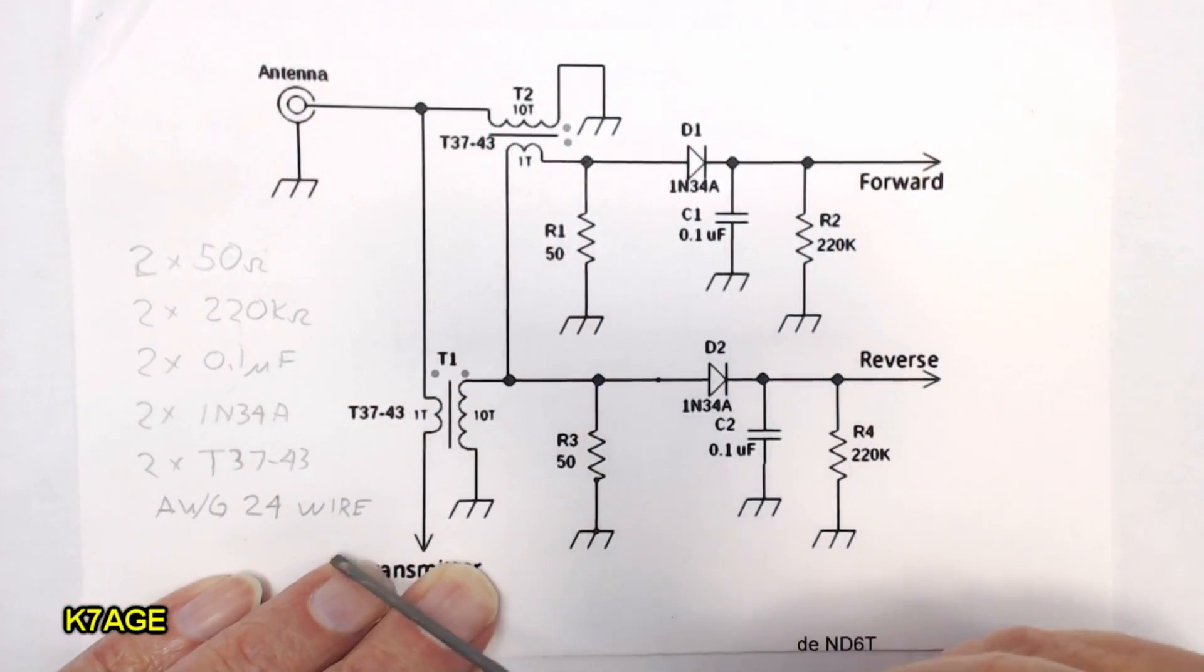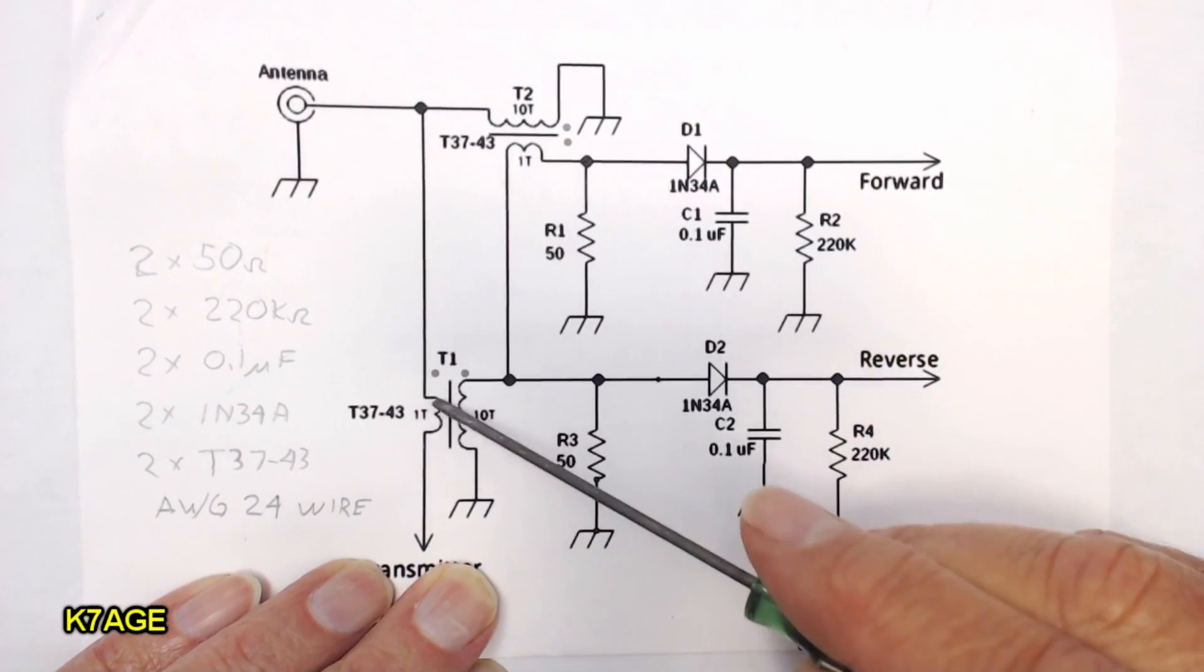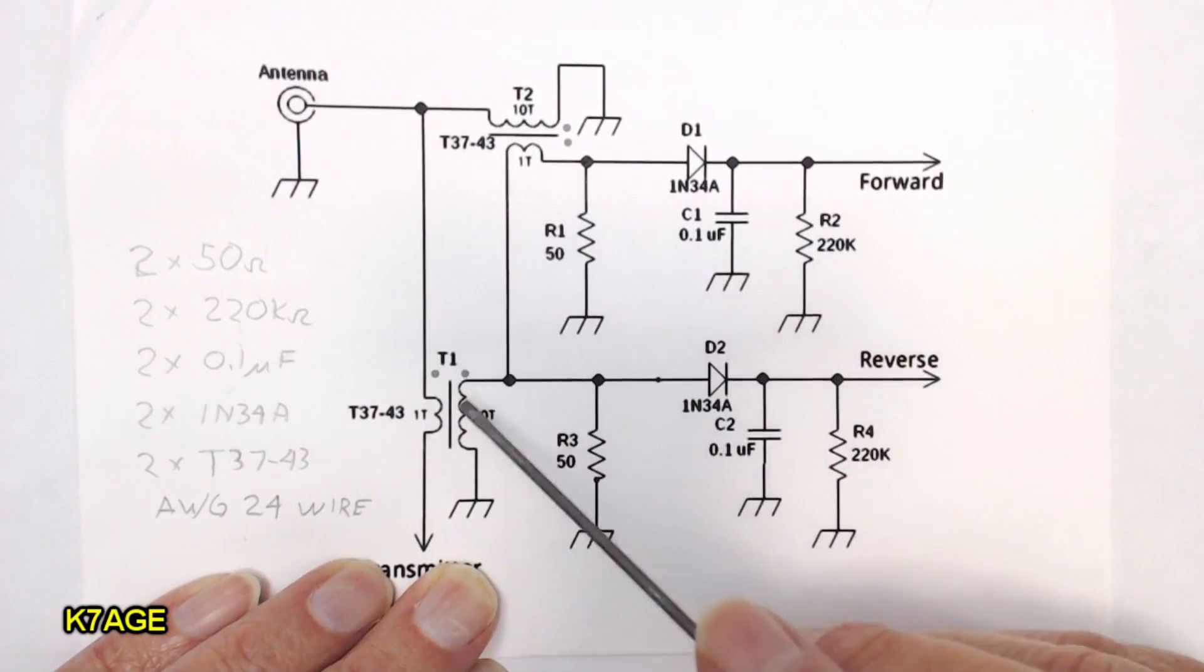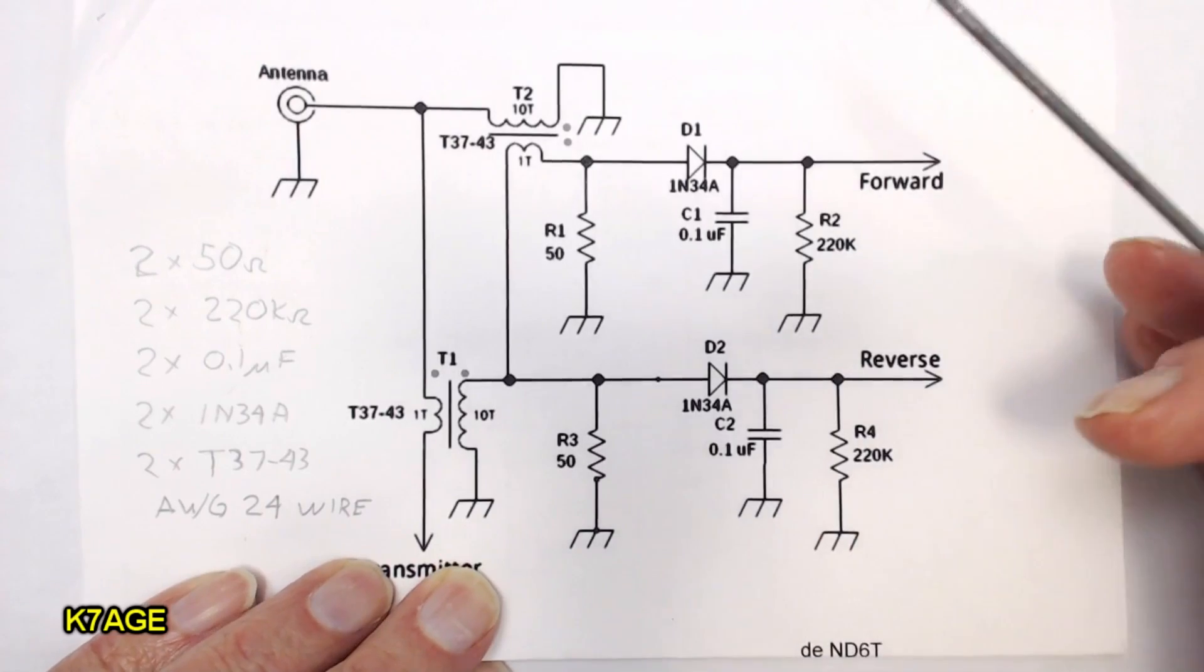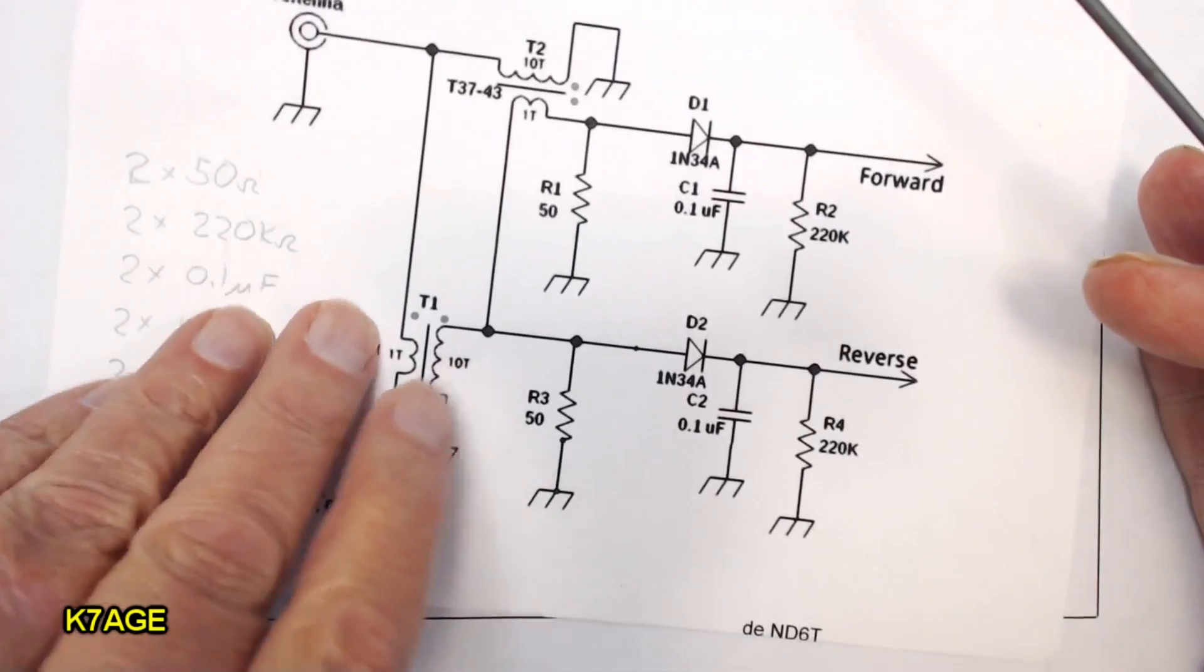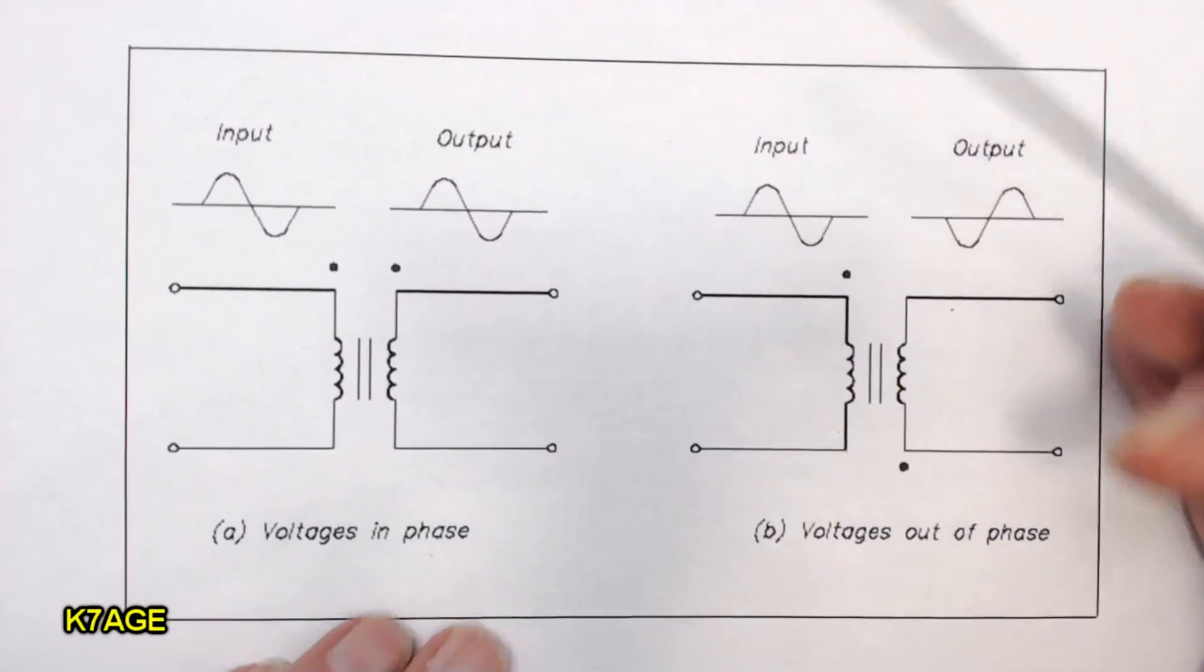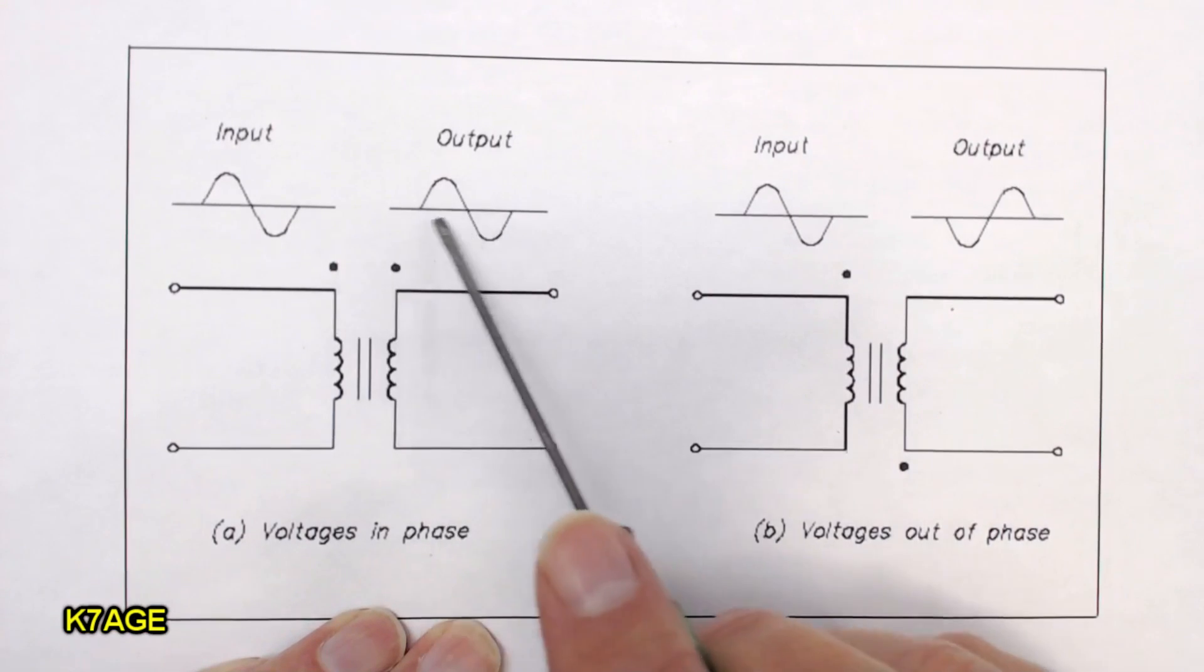So before we get too far along, we should talk about these dots that are on the toroids. Now these are transformers. So what this means is that the winding here and the winding there are in this same relationship. And so therefore the voltage will be in the same relationship. If we look at this drawing, it shows it much more simplified. We show a transformer, and these two ends have the dots on them. So that means the output voltage is following the input voltage.